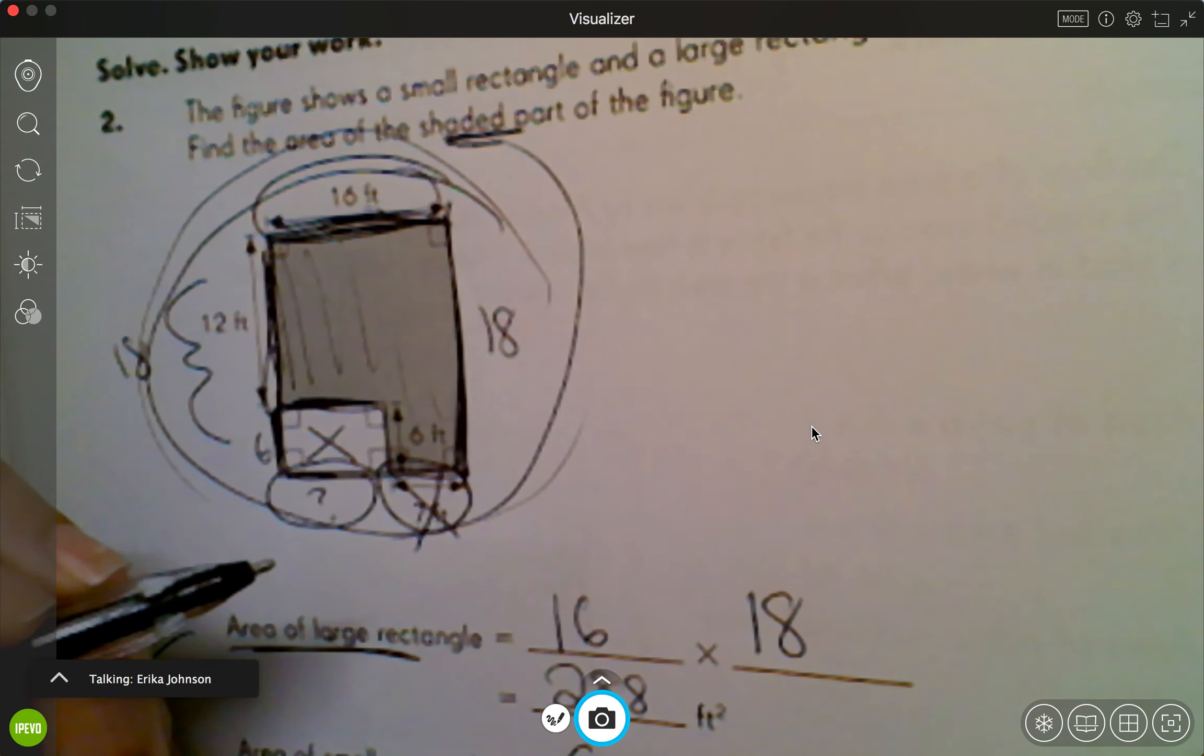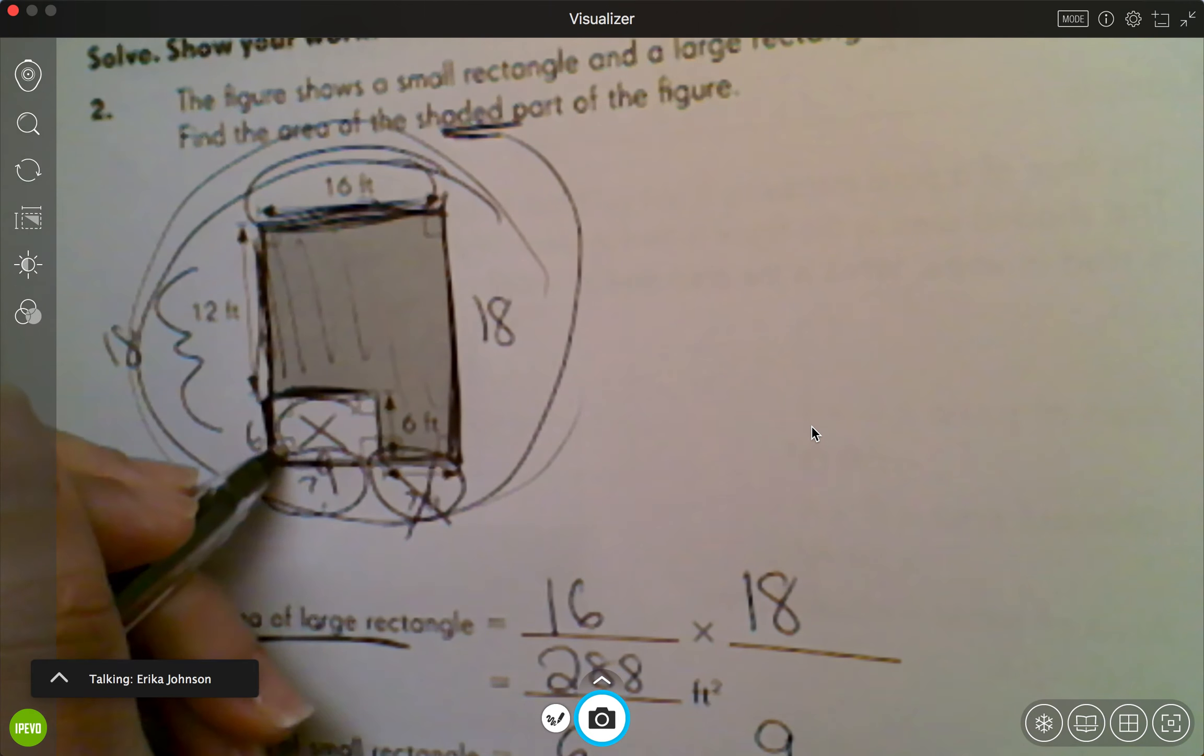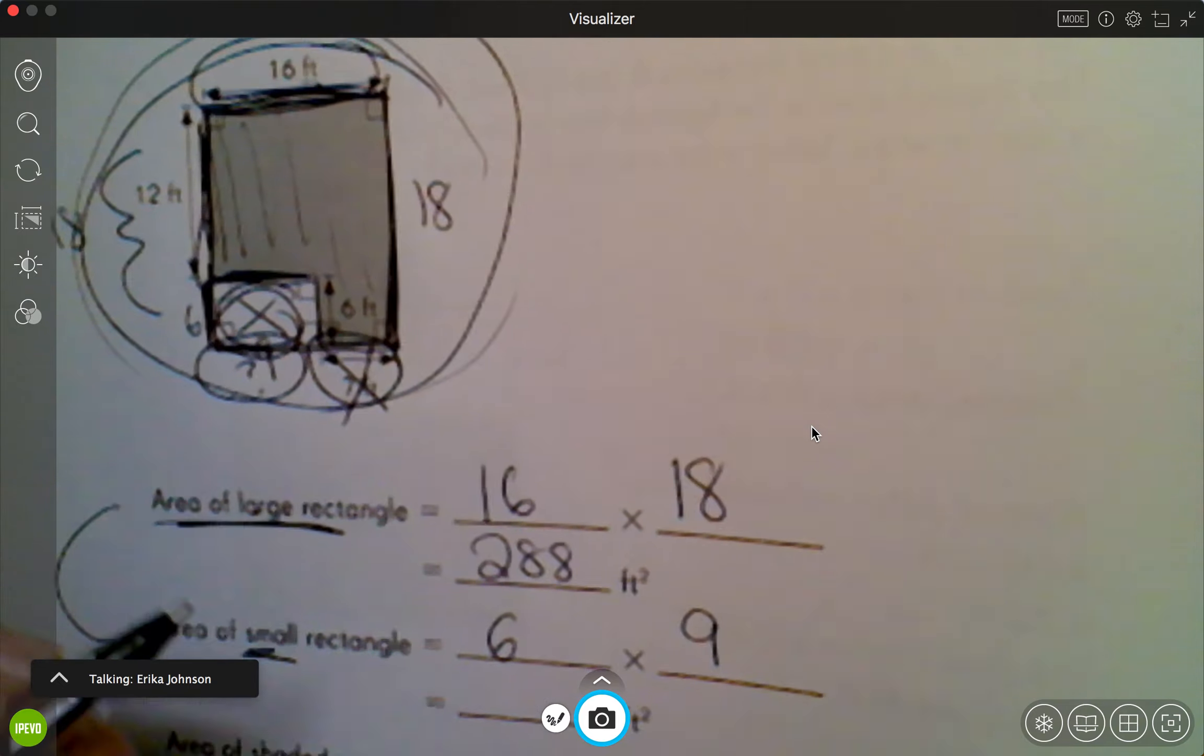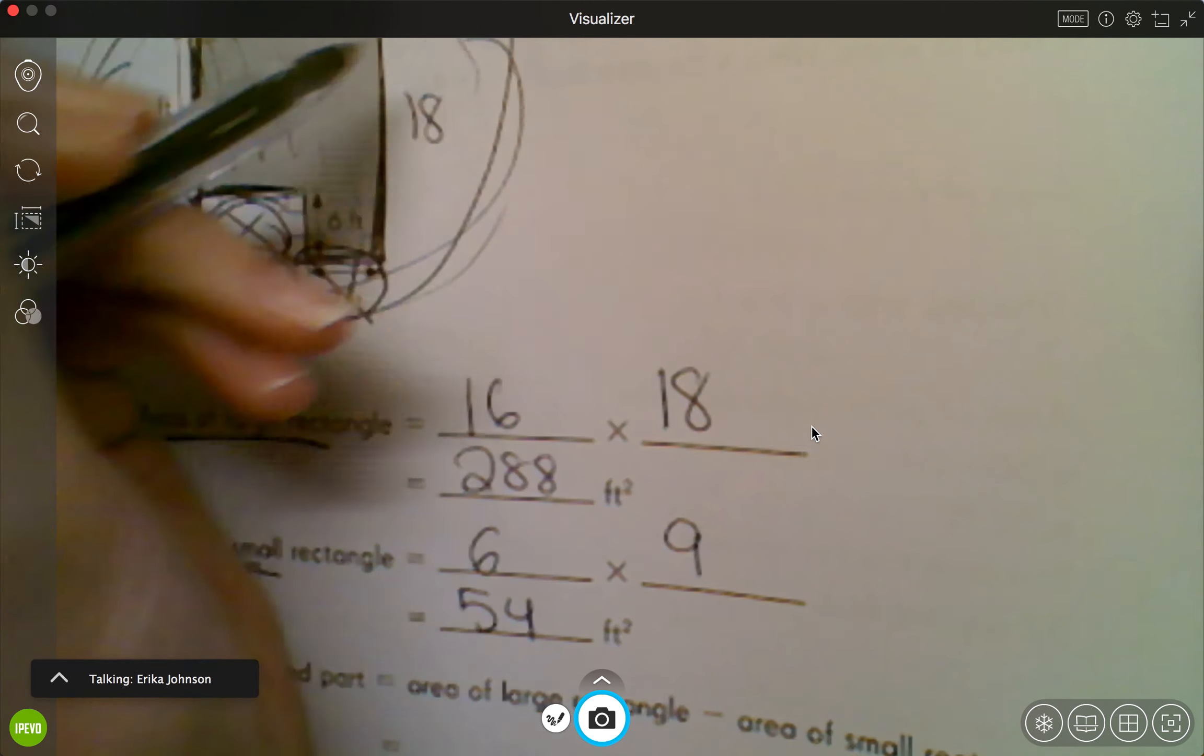So I'm gonna get rid of that 7, and I know that 16 minus 7 gets me to 9. So I know that this is 9. So if I want to figure out the area of this small thing, I have to do 9 times 6, which gets me to 54. So I know that the whole thing is 288 and this small one is 54.